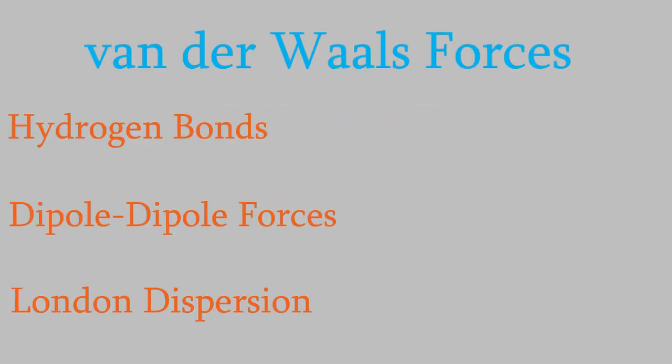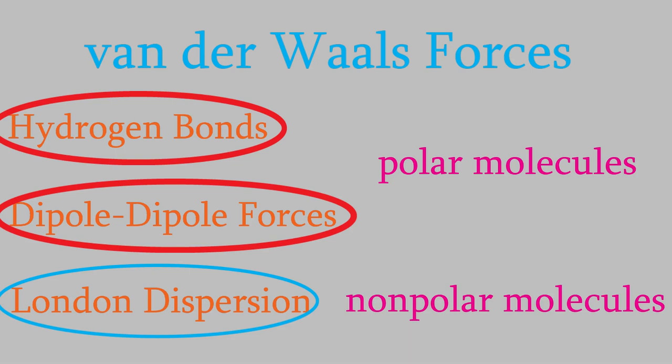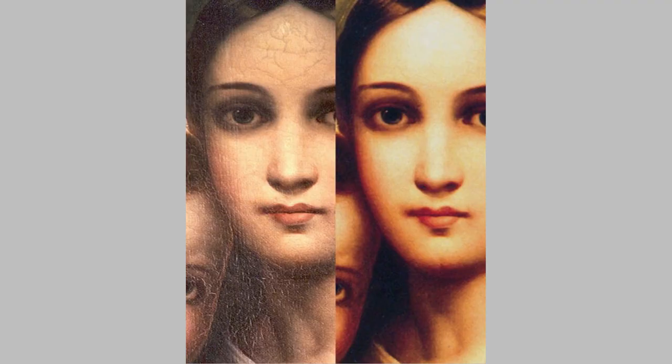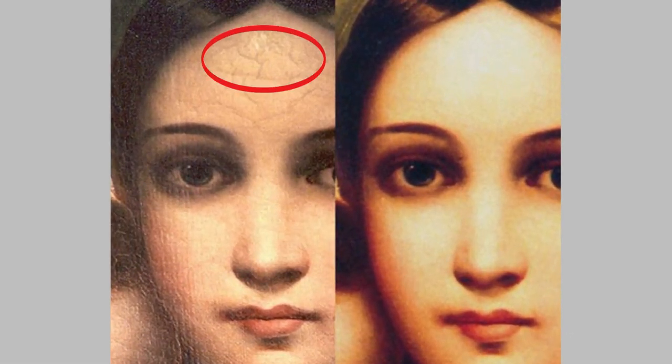Anyway, the van der Waals forces tell us that two polar molecules will attract one another because of dipole-dipole interactions, and two nonpolar molecules will also attract each other, this time because of London dispersion. We can use that to our advantage when we want to preserve old or damaged works of art. For example, here's a before and after image of a painting that's been restored. You can see cracking in the old image, but in the new image the colors are brighter and the cracking has disappeared.